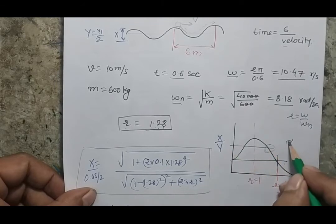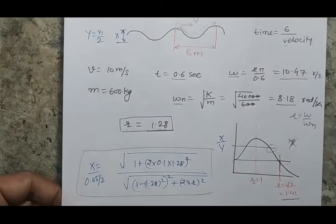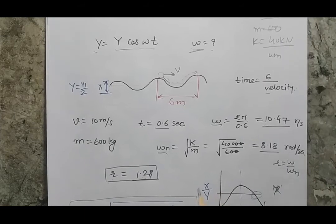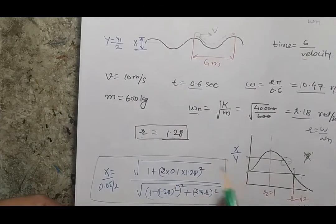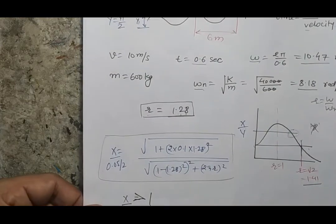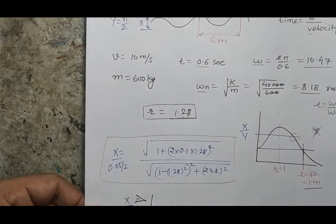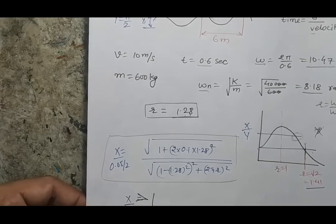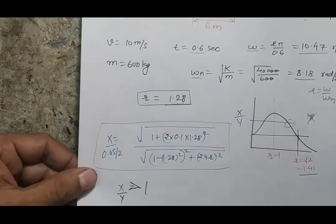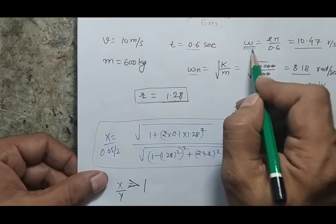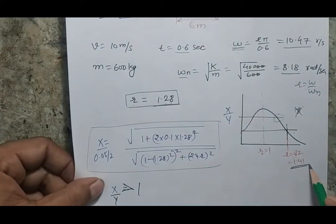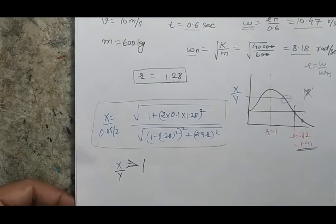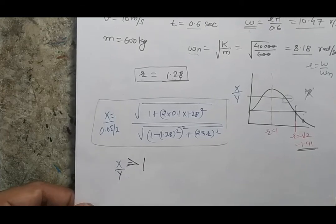Physically, what this means is: if your velocity is 10 m/s, your transmissibility is greater than 1, so X is more than Y. That means if there is a hole of 10 centimeters in the road, you are going to experience more than 10 centimeters of displacement. However, if you change your velocity, ω will increase and r may exceed 1.41, reducing the transmissibility below 1.